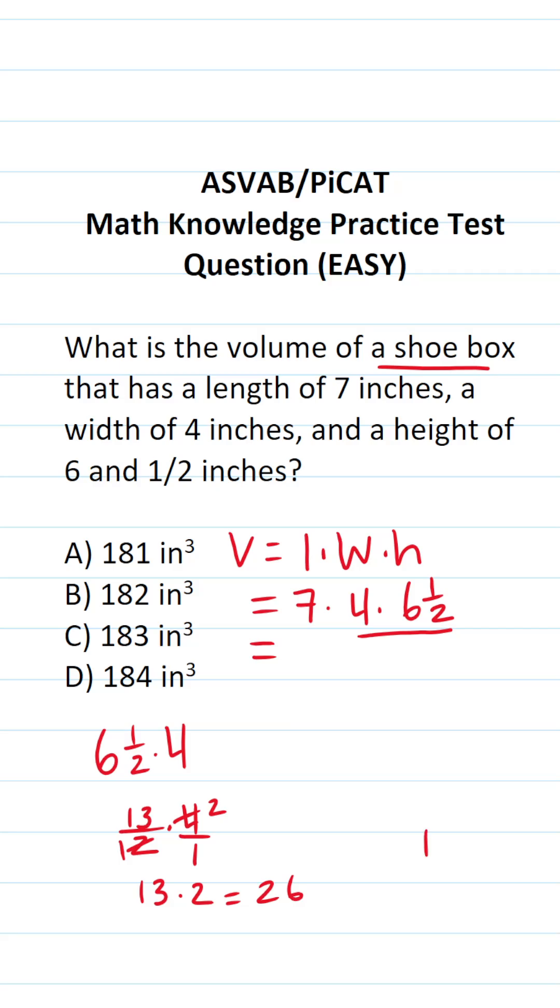And if you couldn't do that part mentally, you could always do it off to the side. 3 times 2 is 6, 2 times 1 is 2. So this becomes 7 times 26. And so as not to make a mistake, I'm going to do this math off to the side as well. 6 times 7 is going to be 42, so bring down a 2, carry a 4.